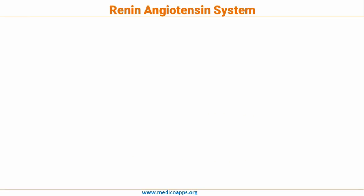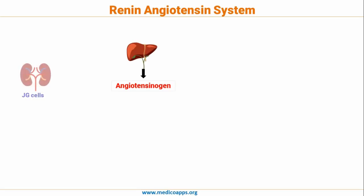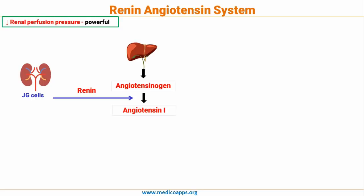The renin-angiotensin system starts with the production of angiotensinogen from the liver. This angiotensinogen has to be converted into angiotensin 1. This happens with the help of renin, which is secreted by the JG cells, or the juxtaglomerular cells. The JG cells produce renin in response to three factors. The most important factor for renin production by JG cells is the renal perfusion pressure.